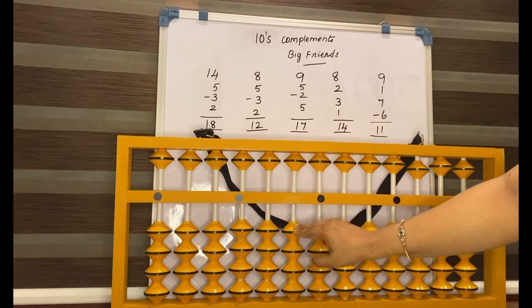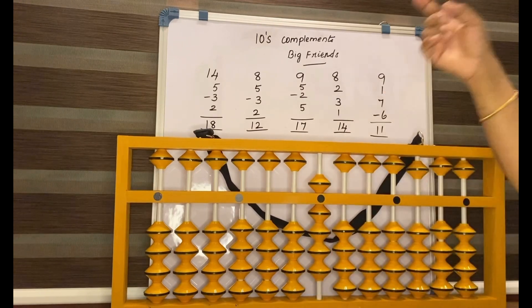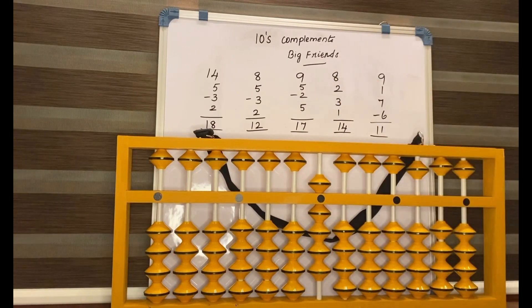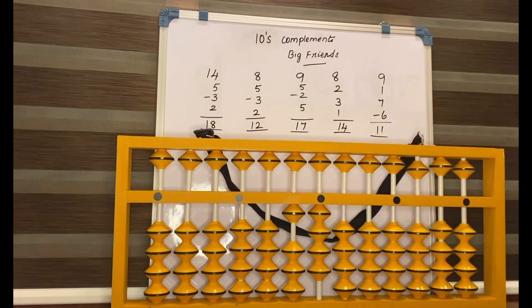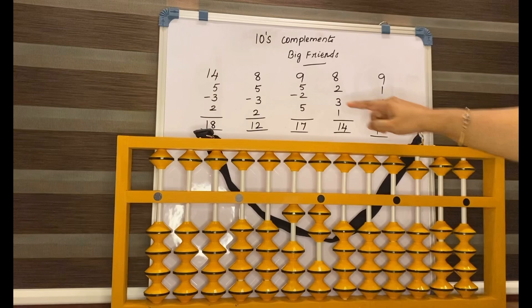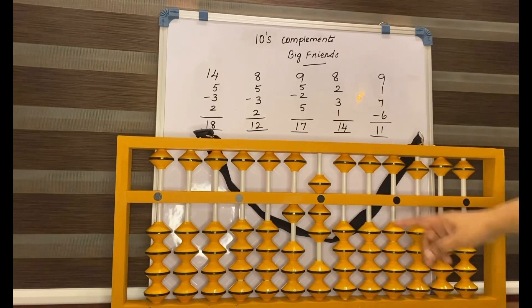Now set 0, 9, 5. How to add 5? Add 10, less 5, less 2, equals 5. That is 17.